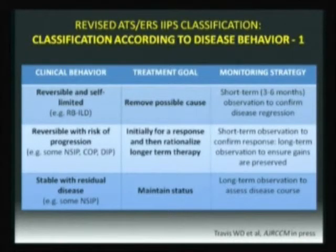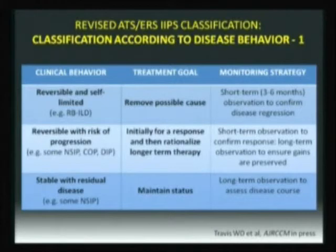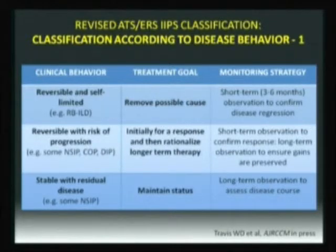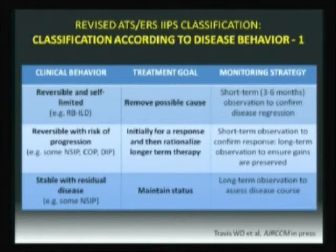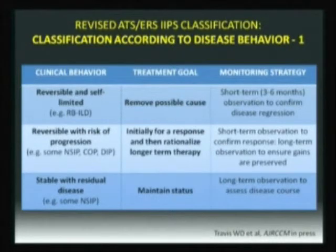The second category is reversible, but with some risk of progression — typically NSIP, COP, or DIP. Initially you look for a response, then rationalize long-term therapy. They can improve but will not revert completely; long-term, the gains are preserved. Most NSIP will be stable with residual disease, and your treatment goal is to maintain the status — they will not improve. You want to maintain the status and monitor long-term to assess disease scores. This is typical of most idiopathic NSIP.